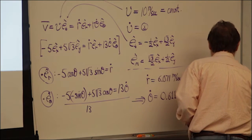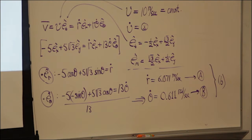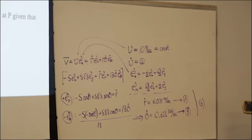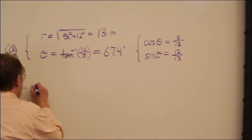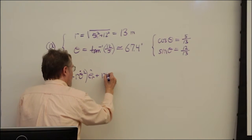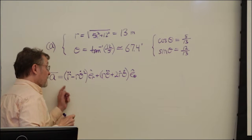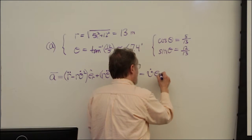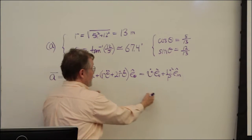Part C: determine the radius of curvature, given the additional information that theta-double-dot equals negative 2. The plan is to choose an expression that lets us use all the cylindrical coordinate information we know, and then equate it to the path expression which contains what we're looking for. Since the particle is moving at constant speed, that term in the path expression is zero.